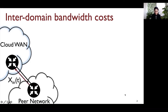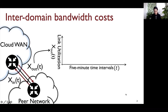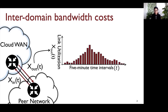I will represent the inbound and outbound utilization of the peer link over time as x_in(t) and x_out(t). On the x-axis I have all five-minute intervals in one month, and the y-axis has the outbound utilizations of the peer link. These vertical bars represent the link's utilization in five-minute time intervals.